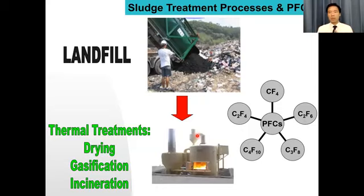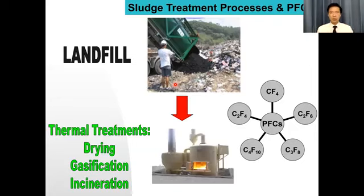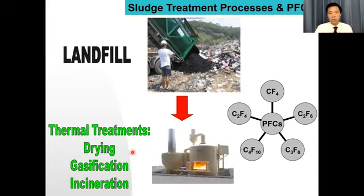We then encountered a new challenge. Once we were clear about what happens when this type of chemical goes to landfill, people suggested: if this chemical is so environmentally unfriendly and difficult to destroy once discharged, why not just burn it? Why not use a so-called thermal treatment process to deal with sludge and burn it all away? Thermal treatments range from what we call incineration — burning at the highest temperatures — down to lower-temperature processes like sludge drying or gasification.